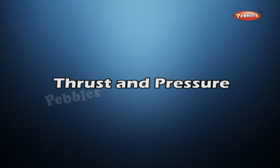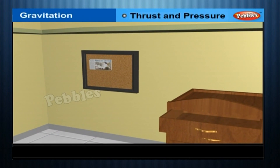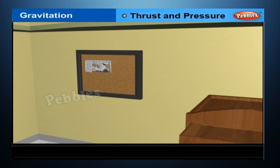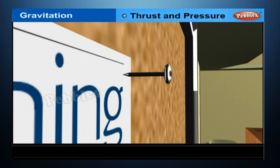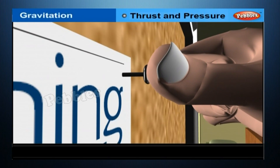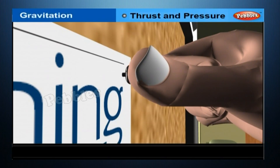Thus the effect of a force depends on the area of the object on which it acts. To fix a poster on a bulletin board, you press drawing pins with your thumb, applying a force on the surface area of the head of the pin. This force is directed perpendicular to the board and acts on a smaller area at the tip of the pin to fix the poster.